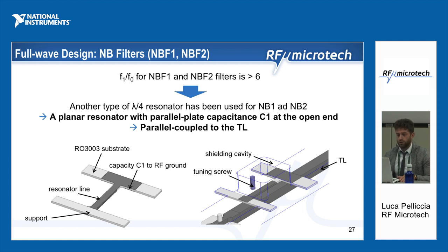I will now show you the design of the resonator used for notch band filters 1 and 2 — the lower frequencies. In this case, the ratio between the first higher order mode and the fundamental mode is above 6, which is a constraint that did not allow us to use the same geometry as for filters 3, 4, and 5. For this reason, we decided to use a planar resonator with a parallel plate capacitance C1 at the open end, parallel coupled to the transmission lines.